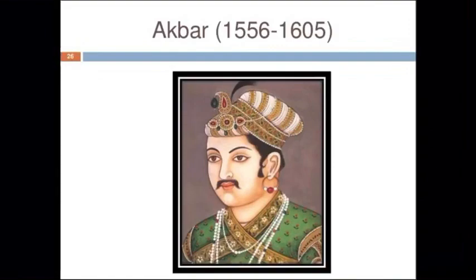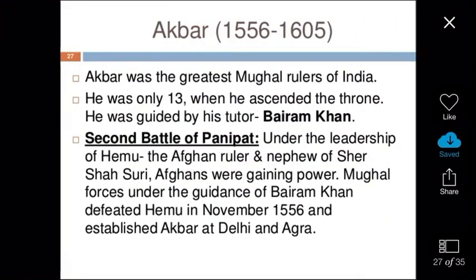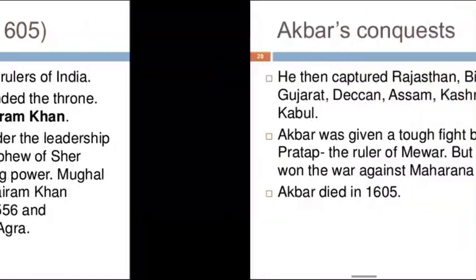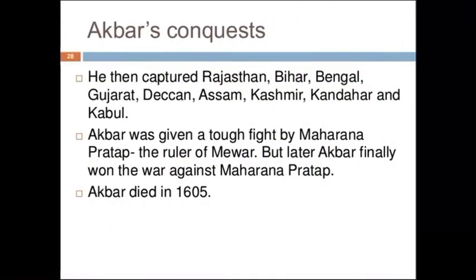Akbar became the emperor of Delhi at the age of 13. He was very competent and soon began to handle the entire empire successfully. He was guided by his tutor Bairam Khan. He fought the second battle of Panipat with Afghan ruler Shersha Suri and defeated him, establishing control over Delhi and Agra in November 1556.